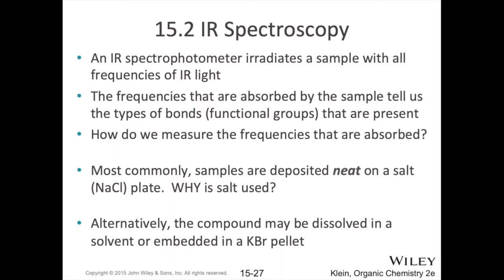A quick note about why we use a salt plate or potassium bromide pellet — for liquid samples like eugenol, you place a couple of drops on a flat sodium chloride salt plate, which goes into a metal holder that slides into the IR spectrometer. For solid samples, you mix with potassium bromide, grind it together, and compress it into a pellet. The reason is that these ionic compounds don't interact with infrared light — they interact with electromagnetic radiation, but not in the infrared region — so they're good materials to hold the substance we're examining without interfering.